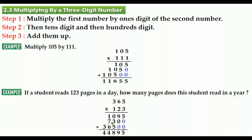7 plus 1 plus 6 makes 14 — the 4 comes here and the 1 carries over. 1 plus 3 is equal to 4. The answer is forty-four thousand eight hundred ninety-five. That's it everybody — see you next lesson!